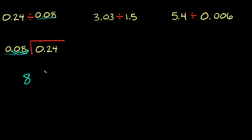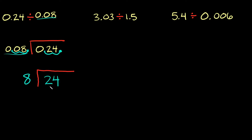Since we moved the decimal two times, we also have to come to our other number and move that decimal two times as well. We take our decimal and move it — one, two — and then our decimal would be right there. So instead of 0.24 we would just have 24. These are the new numbers we're going to be dividing.